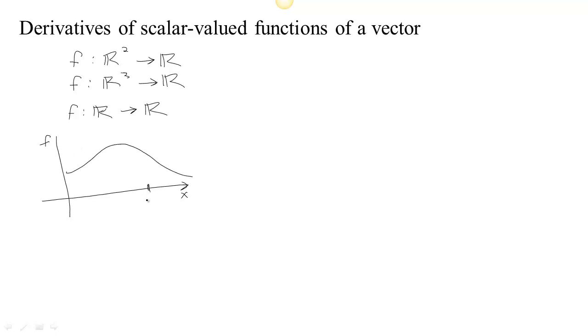And at a particular location, so if you're at some location x₀, then there's really only one direction you can go because there's only one input. The only thing you can change is x. And so there's really only one number that specifies the slope.